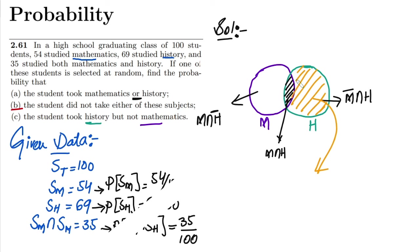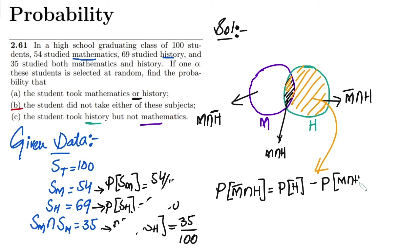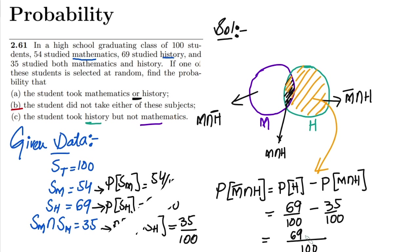The probability of that area equals the total area of history minus the area common to both. So: P(H but not M) = P(H) - P(M ∩ H). Putting in the values: P(H) = 69/100 and P(M ∩ H) = 35/100. Calculating: 69 - 35 = 34, so the answer is 34/100. That is the solution of part C.